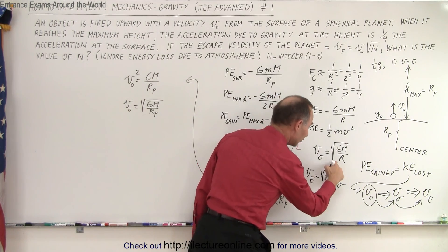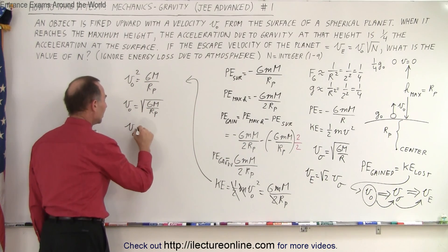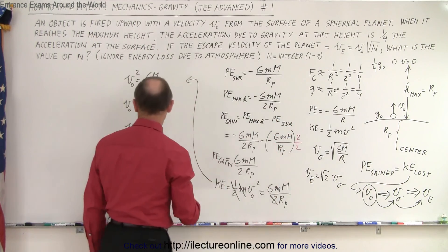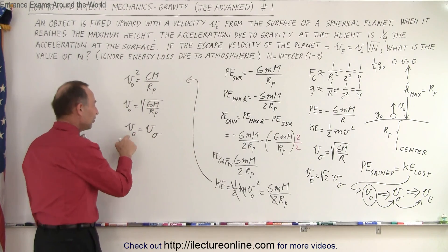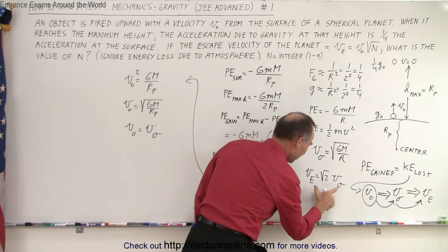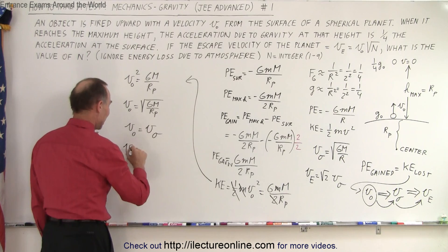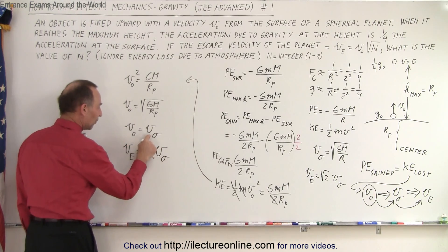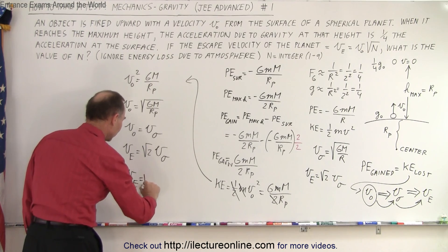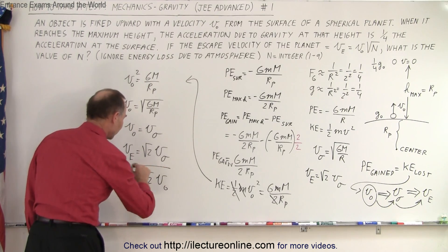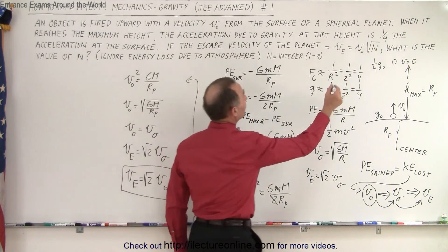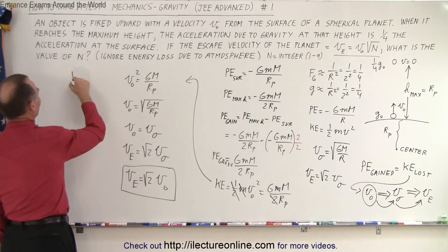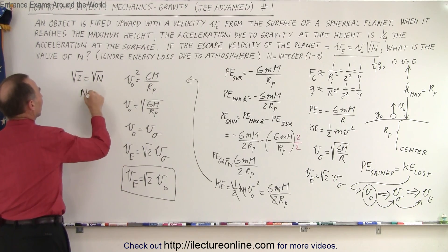The orbital velocity is equal to the square root of GM over R — so the initial velocity equals the orbital velocity. And since the escape velocity equals the square root of 2 times the orbital velocity, and the orbital velocity equals the initial velocity, the escape velocity equals the square root of 2 times the initial velocity. Comparing to the given equation, the square root of 2 equals the square root of n, so n equals 2.